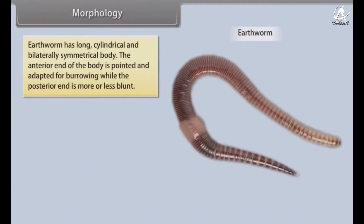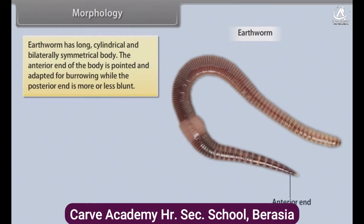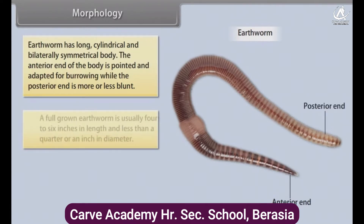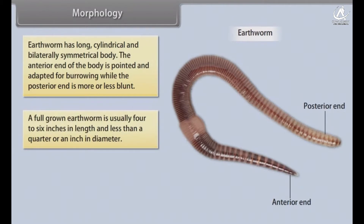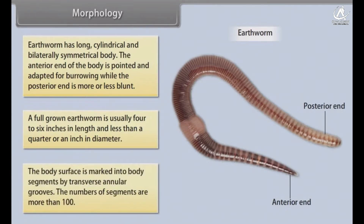Morphology. Earthworm has a long, cylindrical and bilaterally symmetrical body. The anterior end of the body is pointed and adapted for burrowing, while the posterior end is more or less blunt. A full grown earthworm is usually 4–6 inches in length and less than a quarter of an inch in diameter. The body surface is marked into body segments by transverse annular grooves. The number of segments is more than 100.